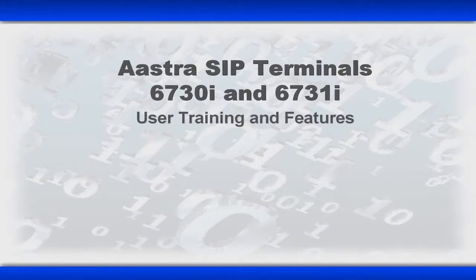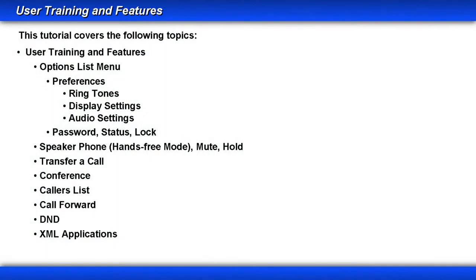Welcome to this lesson on the AstraZip Terminals 6730 and 31i User Training and Features. In this lesson, we'll cover the following topics. We'll explore the option list menus. We'll go into the preferences menu and look at a variety of sub-menus. I'll also talk about the password, status, and lock menus.